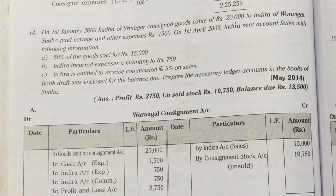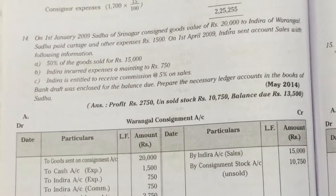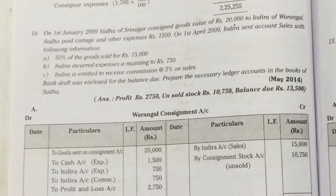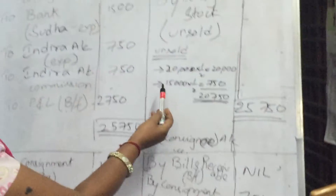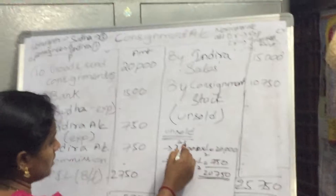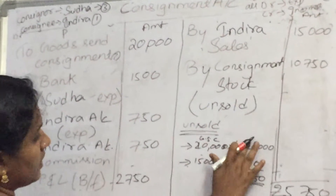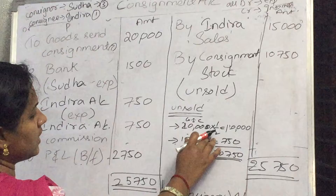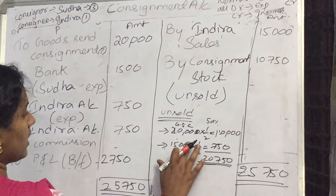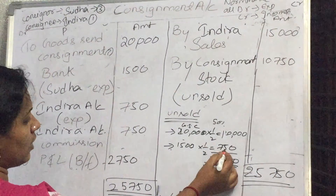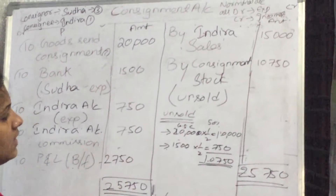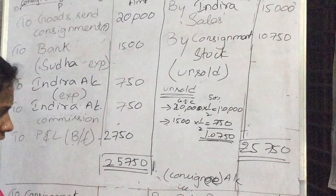Consignment stock means unsold stock, which will be taken only on the credit side of the consignment account. The calculation of unsold stock is: goods sent on consignment 20,000 multiplied by half equals 10,000. Next, consignee expenses 1,500 multiplied by half equals 750. The total is 10,750, which is the consignment stock.